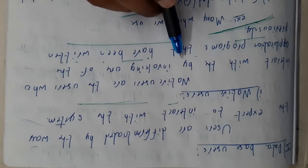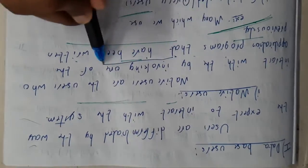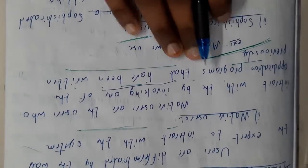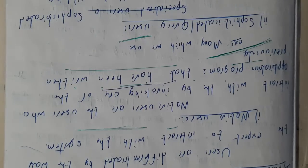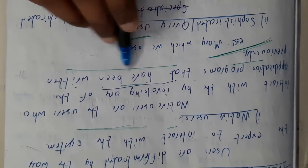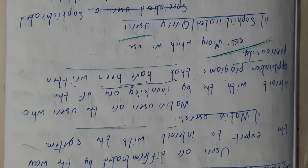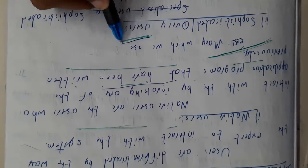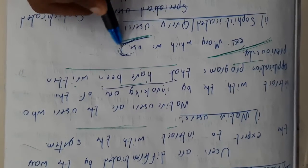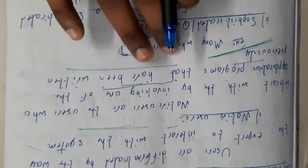The first type will be the naive user. Naive users are the users who interact with the system by invoking one of the application programs — they will be invoking the programs and accessing code that has been written previously by some others. Many of us from the non-programming batch will be coming under this naive users category.